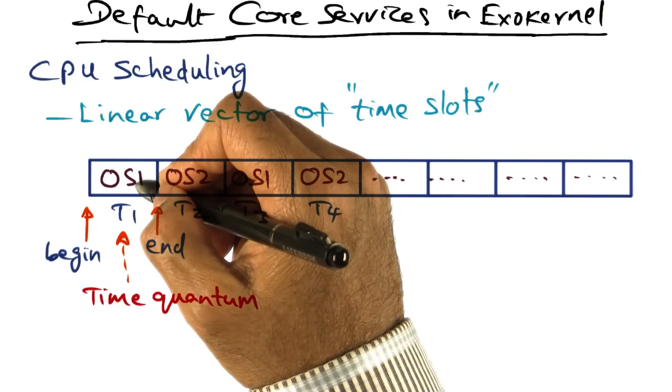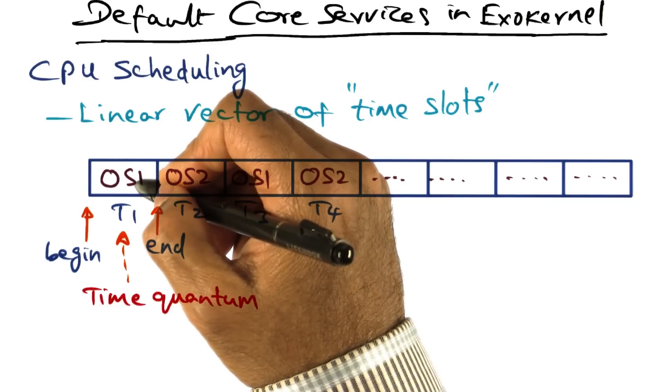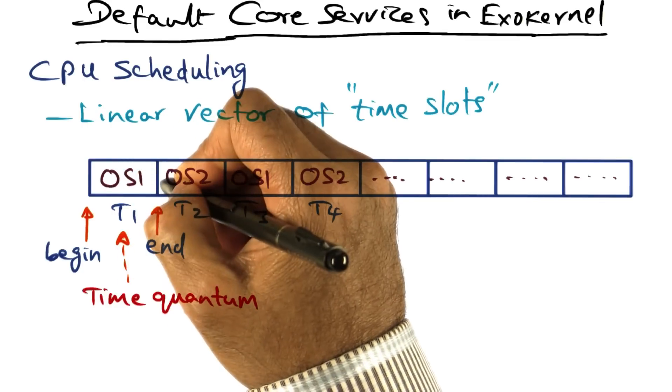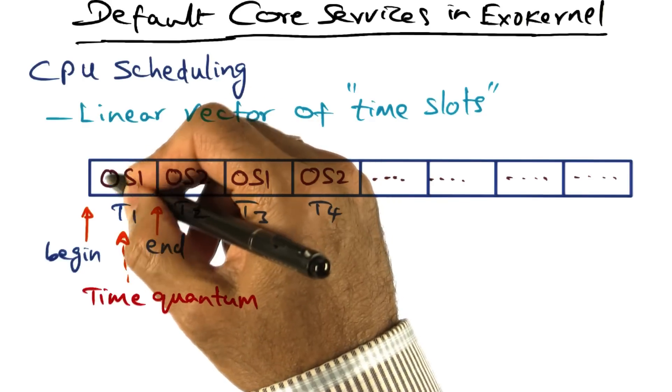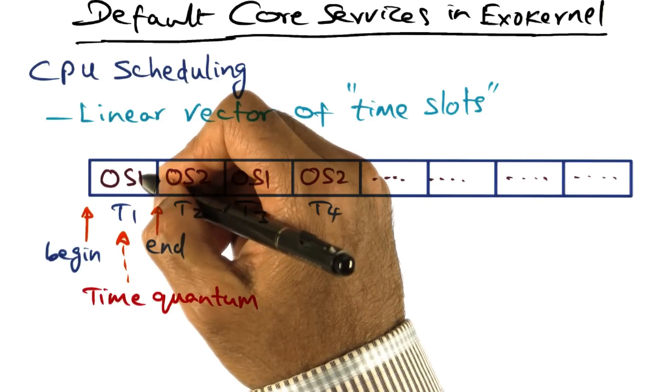In that case, exo-kernel has to come in the middle in order to field that page fault and pass it up to the operating system. Otherwise, during this time quantum, the operating system is entirely at liberty to use the processor for running whatever processes it wants to.